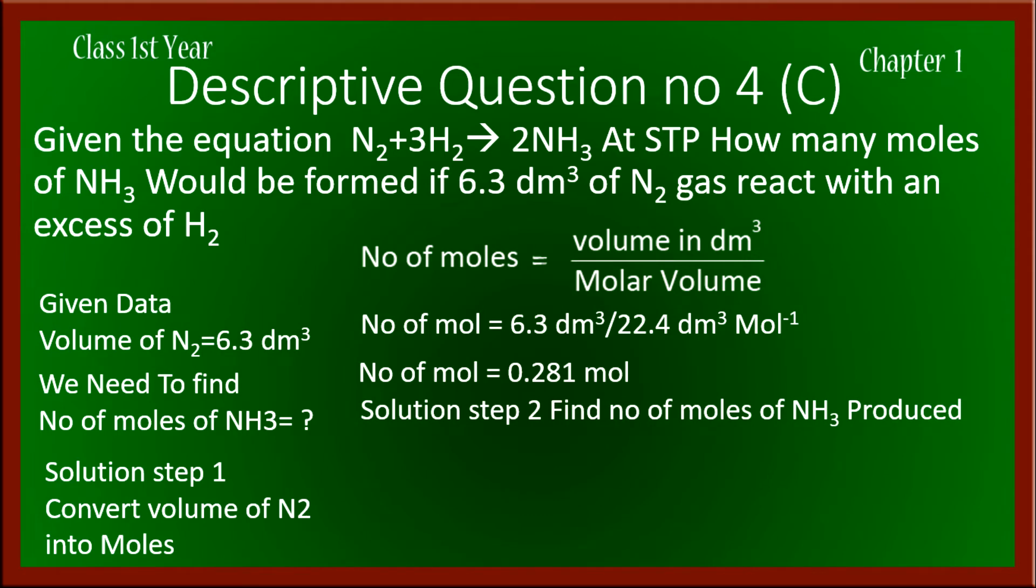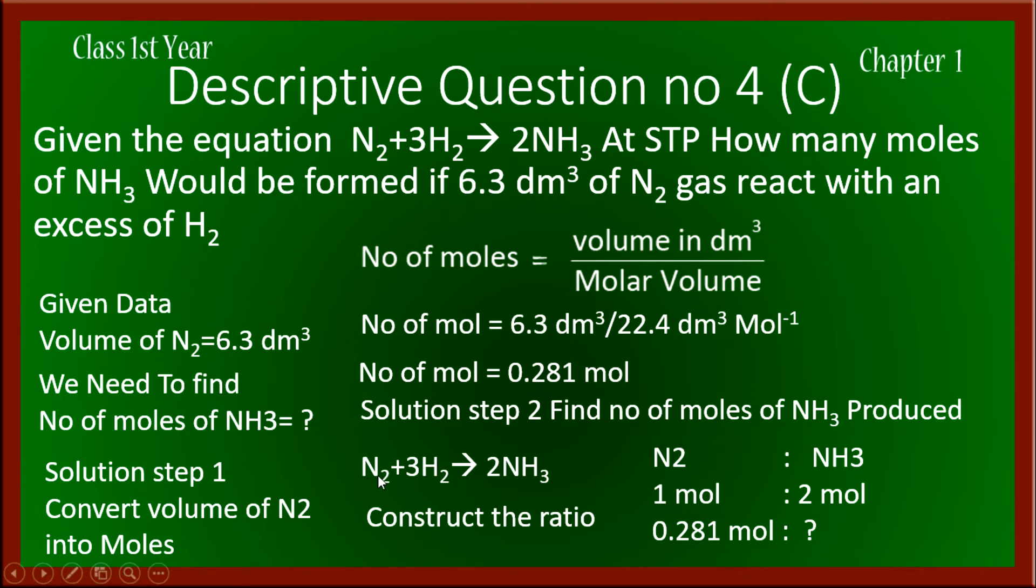Solution step 2 is to find the number of moles of ammonia produced. We take the balanced chemical equation: 1 mole of nitrogen reacts with 3 moles of hydrogen to produce 2 moles of ammonia. From this equation, we construct our ratio using nitrogen and ammonia.